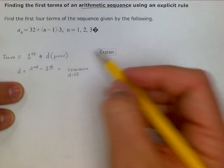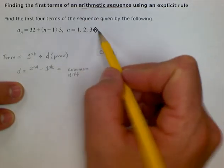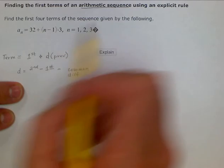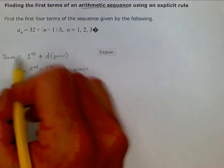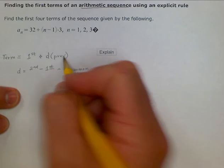So, it wants us to find the first four terms. Well, if we look at this, we would rewrite this in the a sub n subscript form.